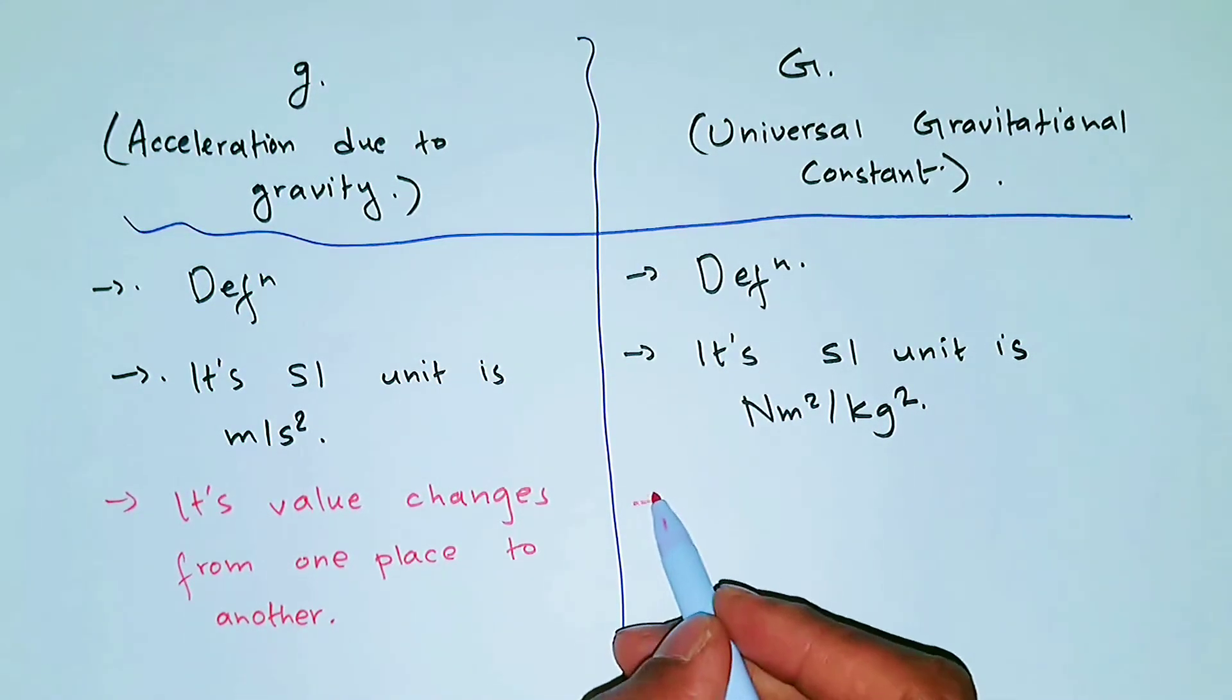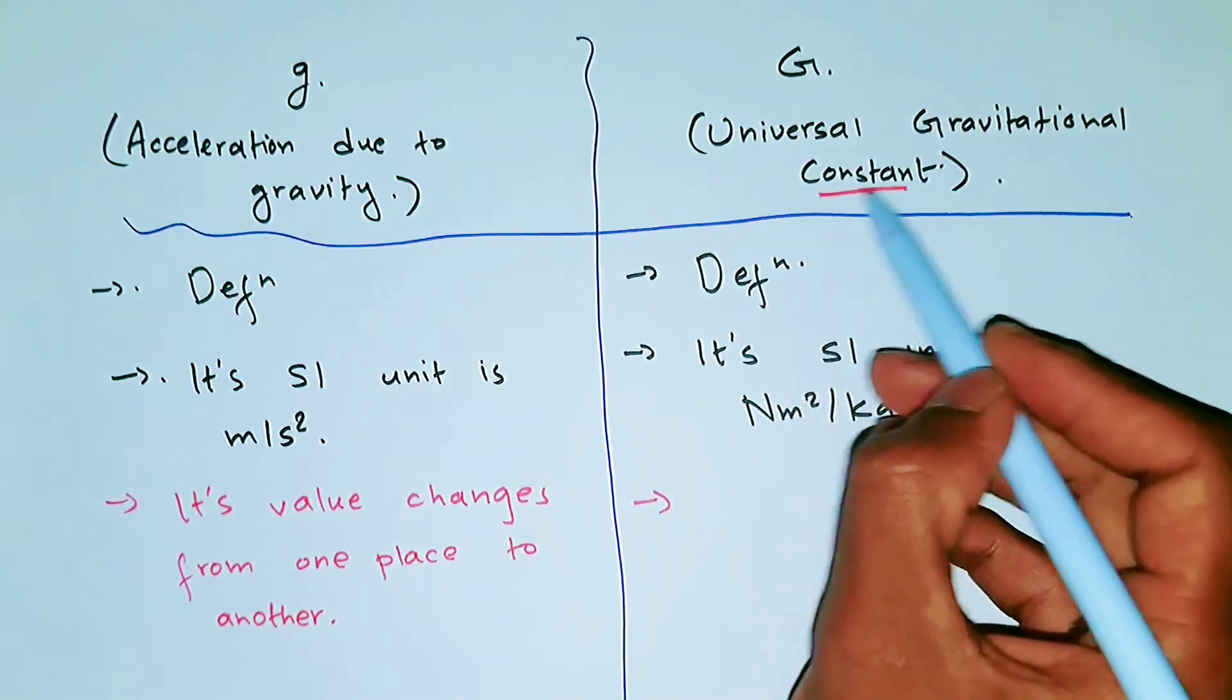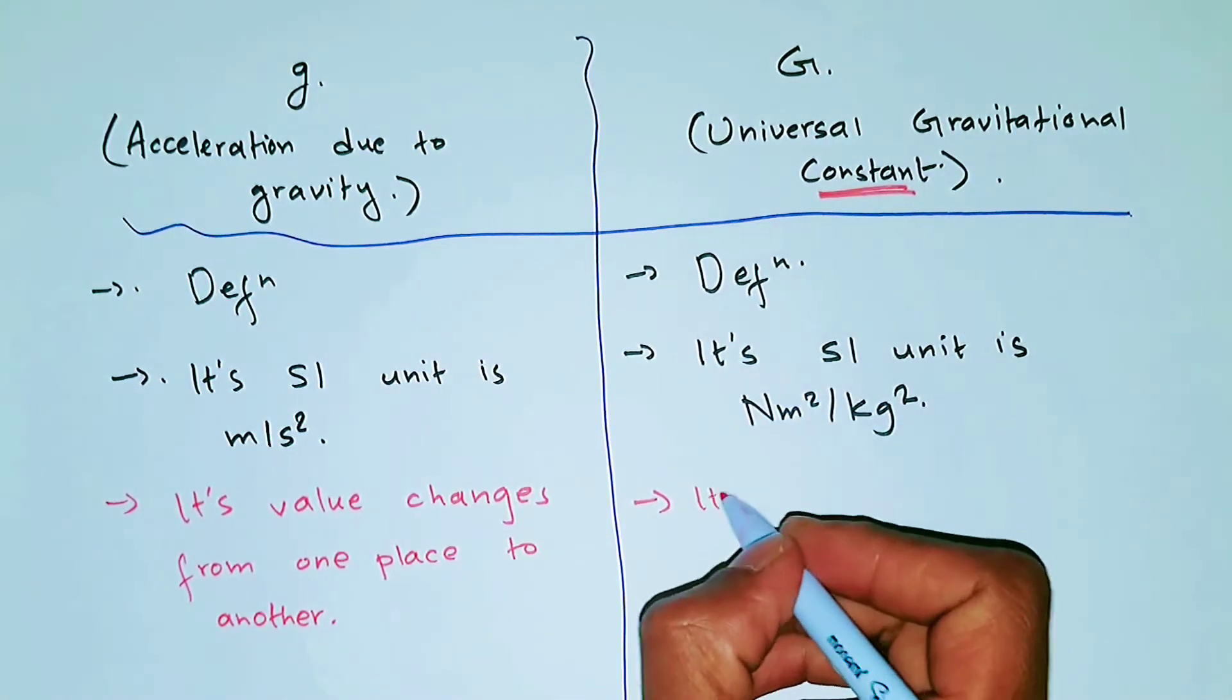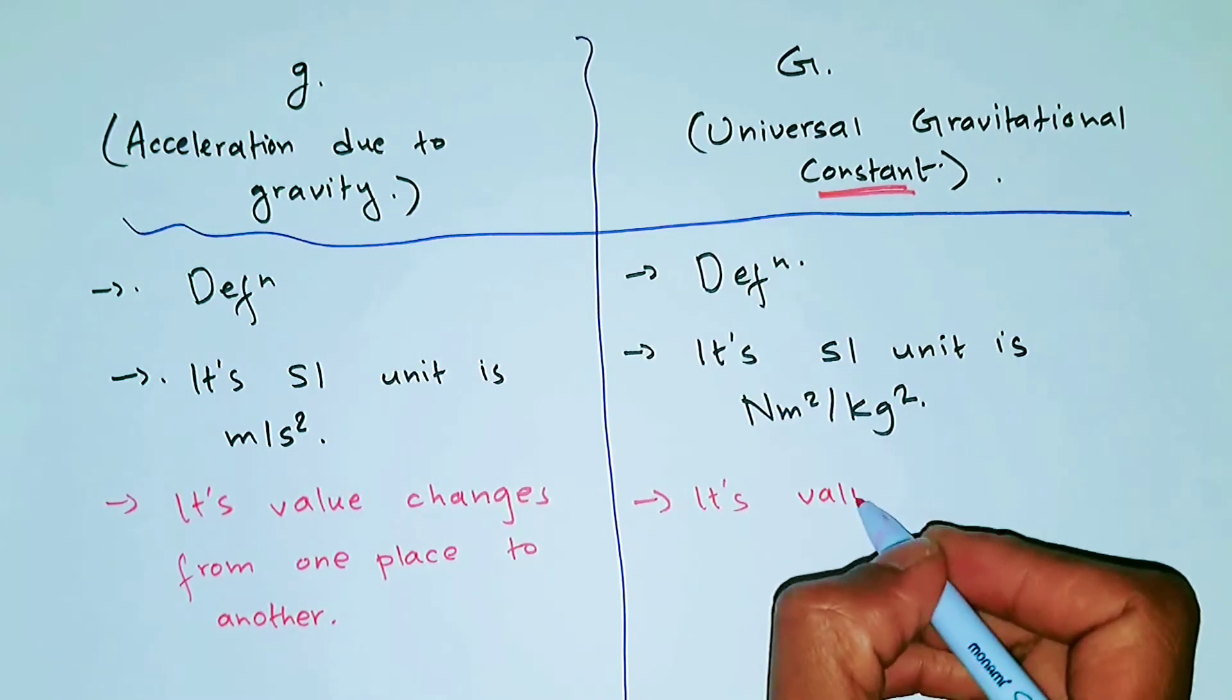Whereas the value of capital G does not change. That's why it's called constant. So its value is always constant.